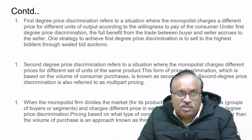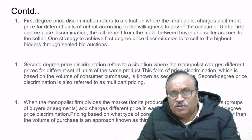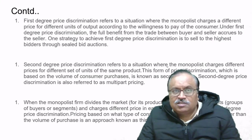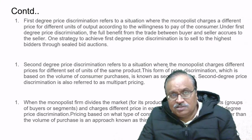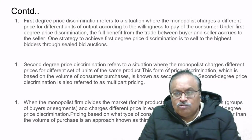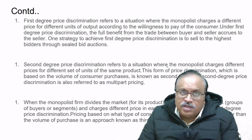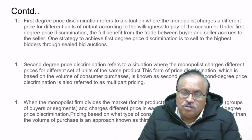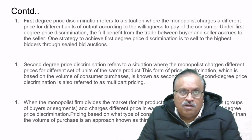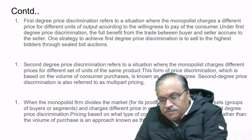Third-degree price discrimination means customers for the same product are segregated. In the airline industry, ticket prices may differ by customer profile—for senior citizens the charge is less, for students even less, while for working professionals or businesspeople the charge is higher. We divide customer segments and charge based on the type of customer. Pricing based on the type of consumer rather than volume of purchase is third-degree price discrimination. To summarize: second degree is based on volume; third degree is based on type of consumer; first degree maximizes the seller's benefit.